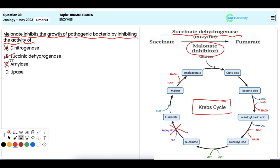Option D: Lipase. It is also incorrect. It breaks down fats and is not the target of melanin.